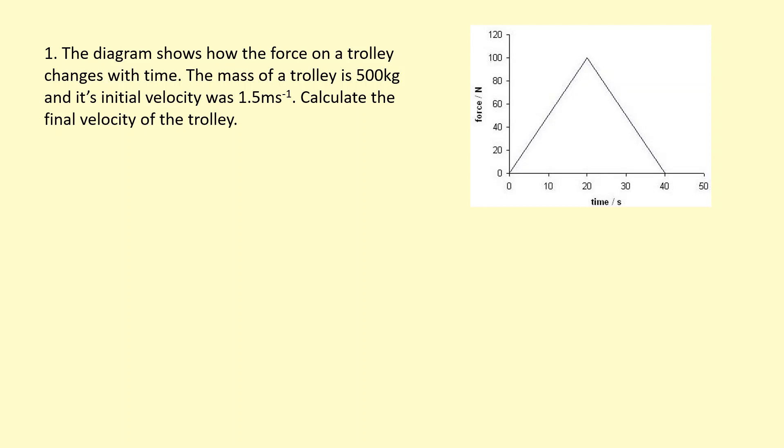The diagram shows how the force on a trolley changes with time. The mass of the trolley is 500 kilograms, and its initial velocity was 1.5 meters per second. Calculate the final velocity of the trolley. So first, we're going to use this graph to work out the impulse. So to do that, we're going to work out the area of the graph.